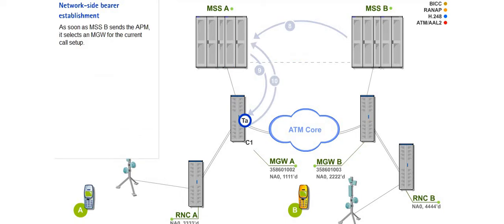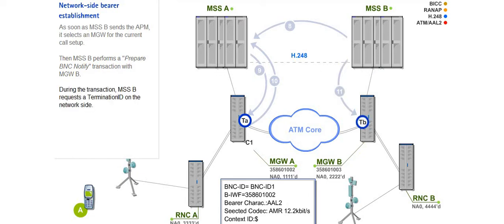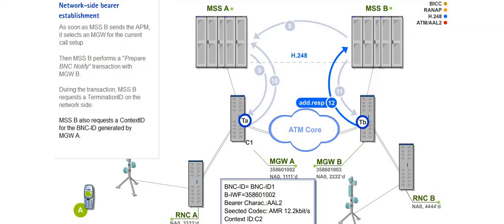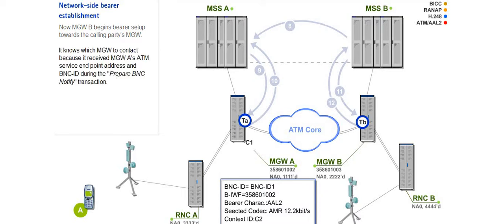As soon as MSSB sends the APM, it selects an MGW for the current call setup. Then MSSB performs a prepare BNC notify transaction with MGWB. During the transaction, MSSB requests a termination ID on the network side, and also requests a context ID for the BNC ID generated by MGWA. Now MGWB begins bearer setup towards the calling party's MGW. It knows which MGW to contact because it received MGWA's ATM service endpoint address and BNC ID during the prepare BNC notify transaction. The ATM service endpoint address is also known as the bearer address.